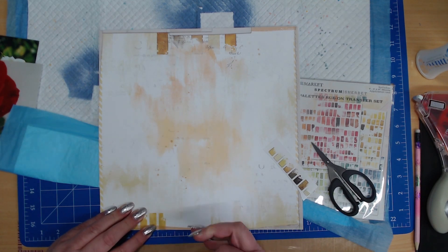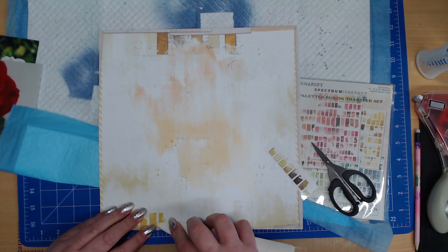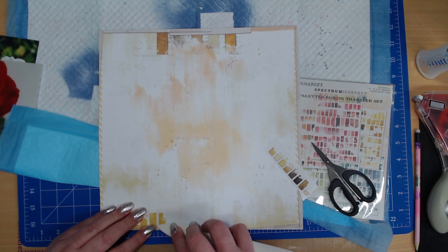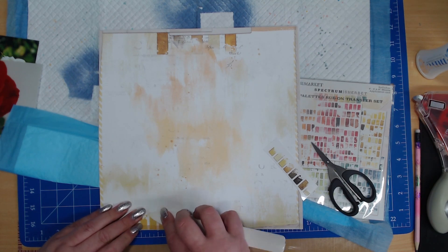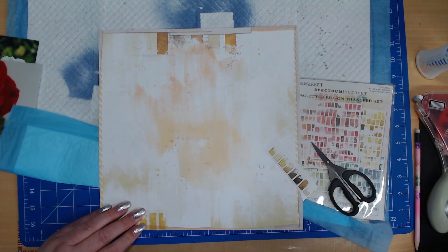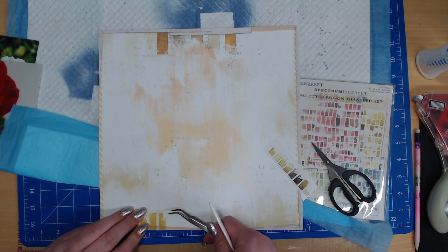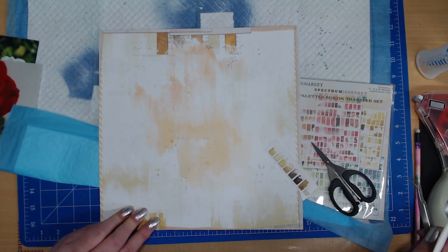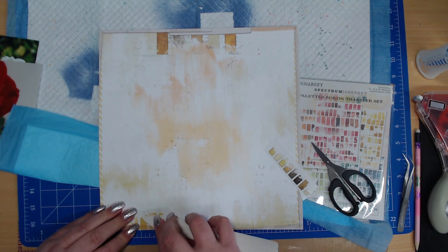So then you just take one of these and you can see as it starts to be put down that it goes a little bit opaque. You can see the colors lifting away. You can see that the colors lifted. It's just different. So you just rub them on.